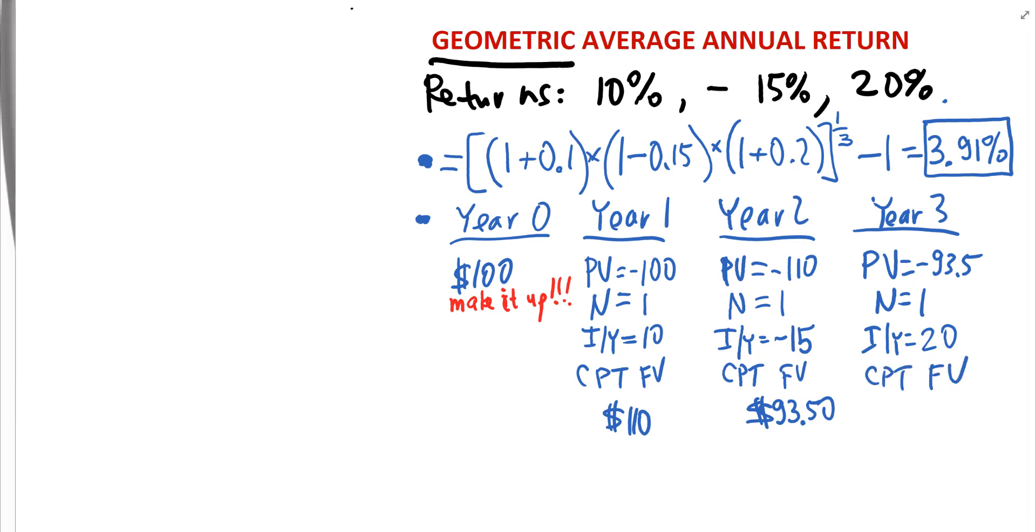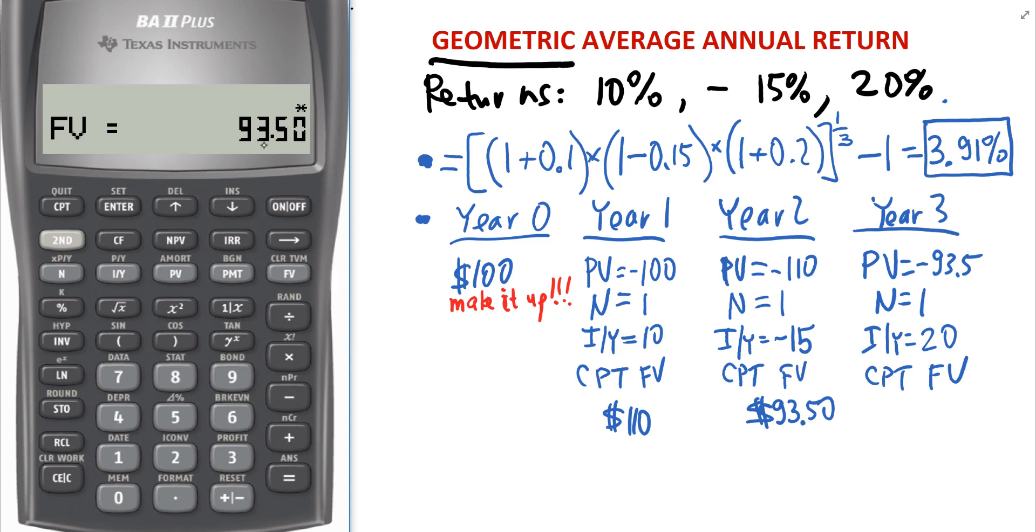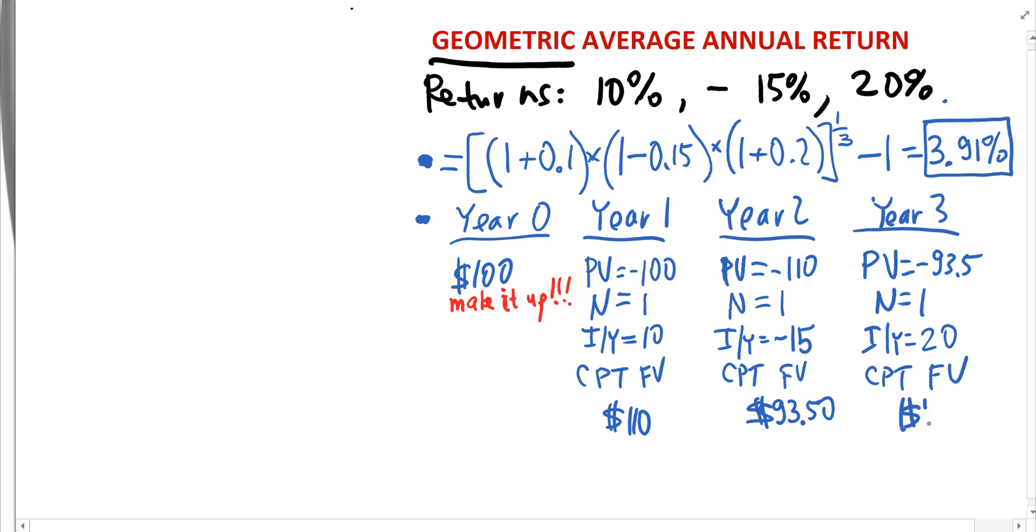Let's see what that's going to be. Okay. So this becomes my present value and I need to make it negative first. Negative PV. 1 and 20 IY compute future value. 112.20, right? 112.20. So 112.20.